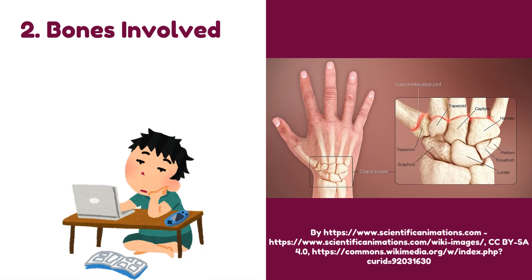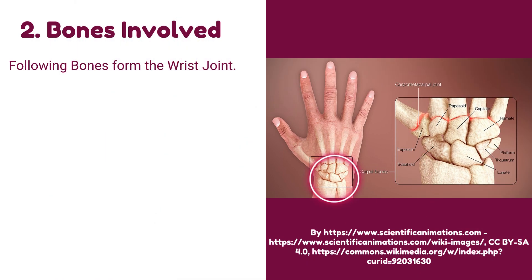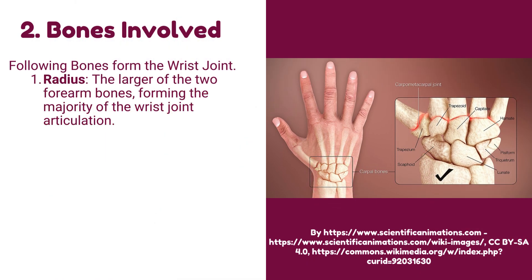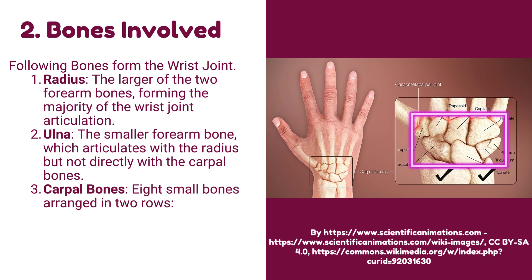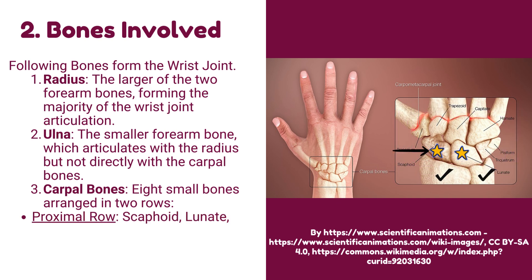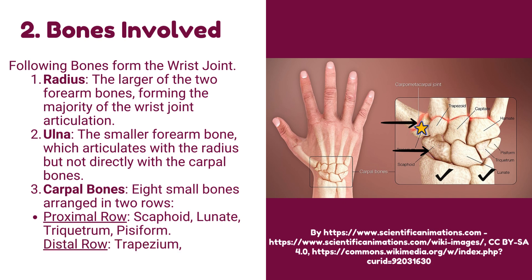Number 2: Bones involved in the wrist joint. The following bones form the wrist joint. Radius: it is the larger of the two forearm bones, forming the majority of the wrist joint articulation. Ulna: it is the smaller forearm bone, which articulates with the radius but not directly with the carpal bones. Carpal bones: these are 8 small bones arranged in 2 rows. Proximal row: scaphoid, lunate, triquetrum, and pisiform. Distal row: trapezium, trapezoid, capitate, and hamate.